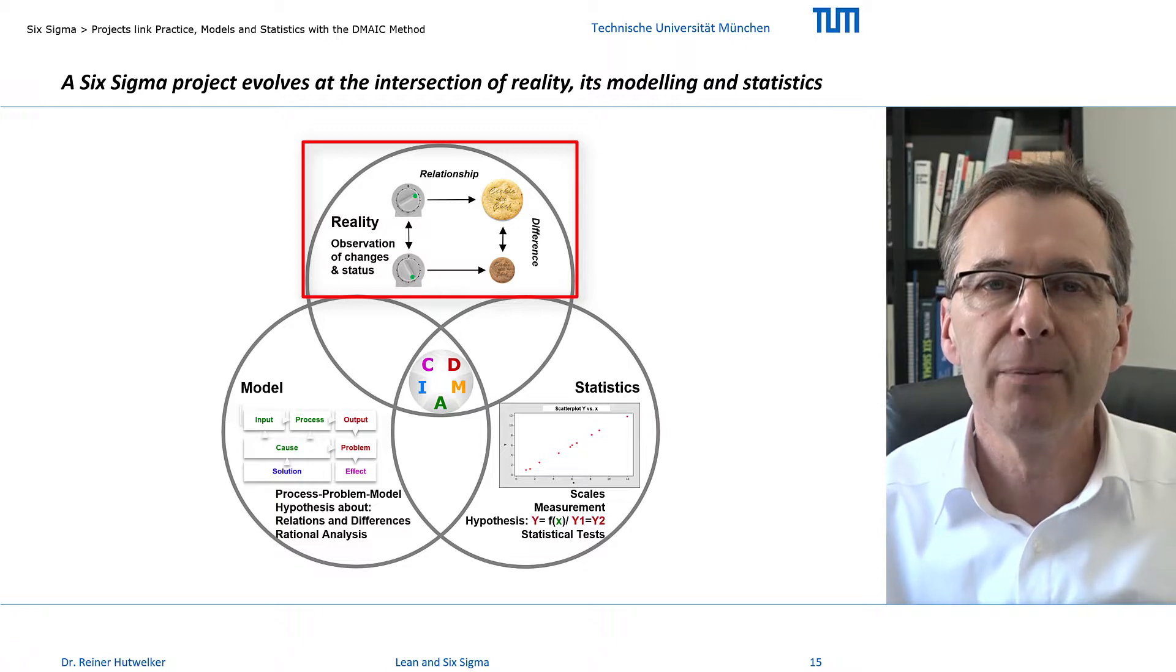Differences and relationships are the elements for our assumptions of causal relationships.